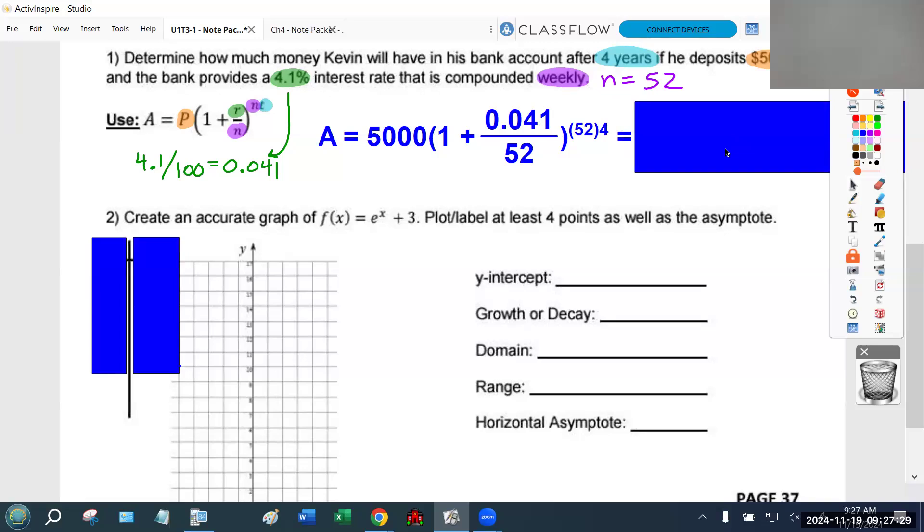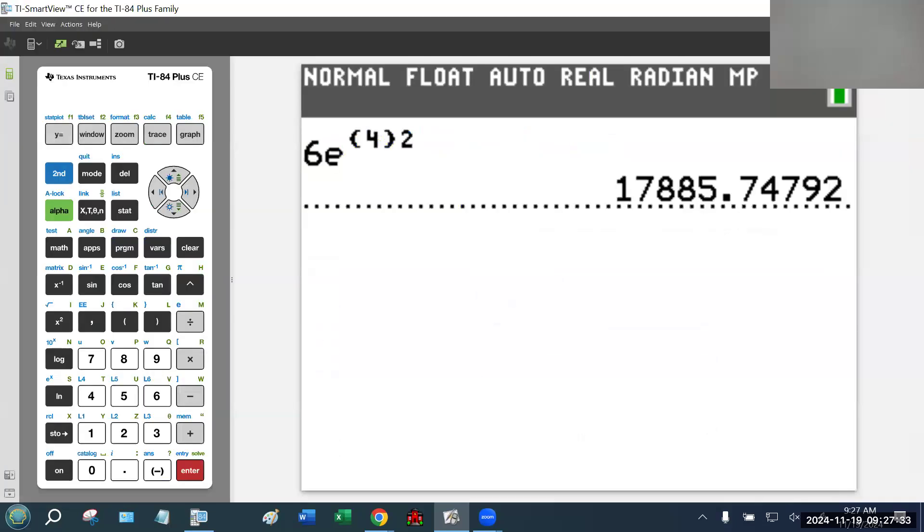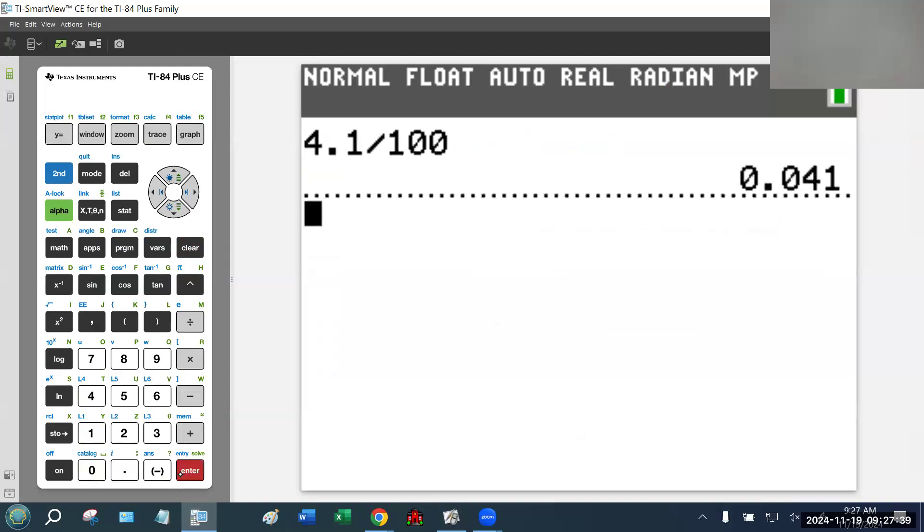You can type this in exactly as it's written in your calculator. I'll demonstrate that now. First I took the interest rate and divided by 100 to convert it to a decimal. Then I say I'm starting with 5,000, earning 4.1% interest split over 52 payments, and that means I get 52 payments a year for four years.